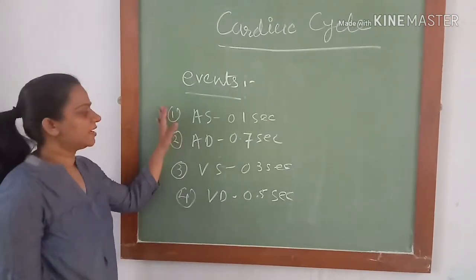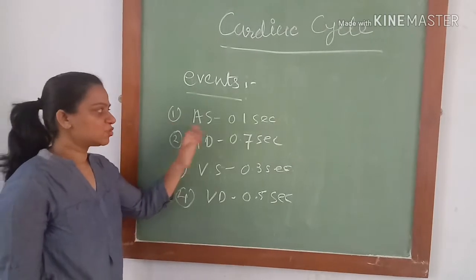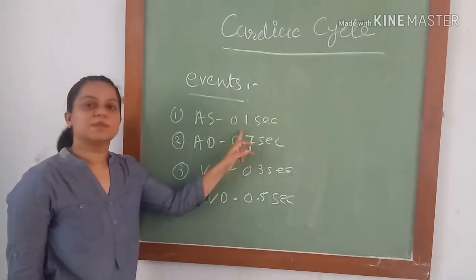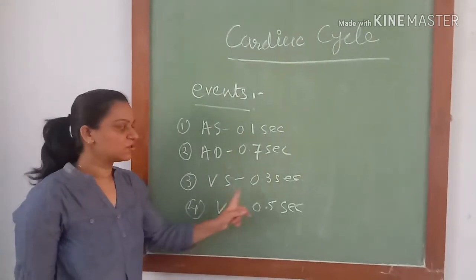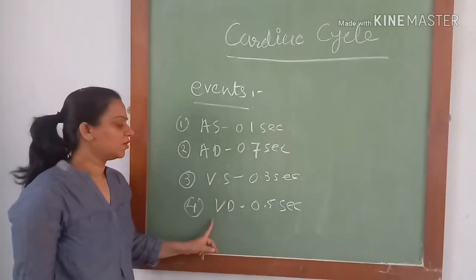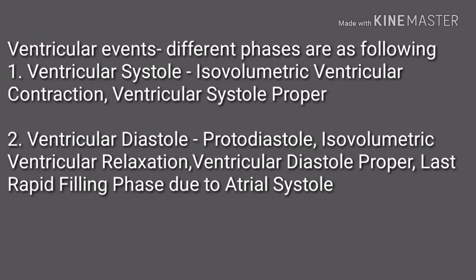The different events of cardiac cycle are: first, atrial systole with a normal duration of about 0.1 second; atrial diastole of about 0.7 second; ventricular systole of about 0.3 second; and ventricular diastole of 0.5 second. Different phases of ventricular systole are isovolumetric ventricular contraction and ventricular systole proper. Different phases of ventricular diastole are protodiastole, isovolumetric ventricular relaxation, ventricular diastole proper, and last rapid filling phase due to atrial systole.